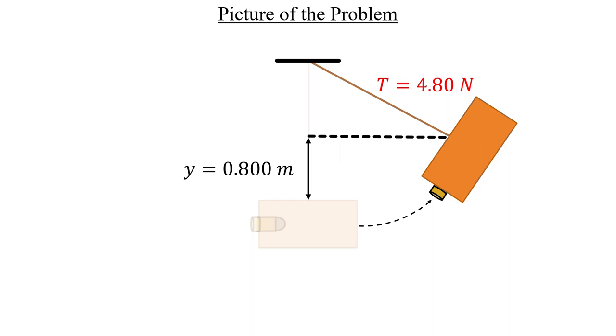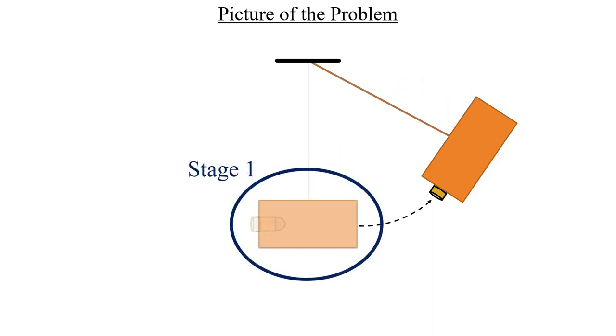This problem is also a really good example that demonstrates the limitations of our conservation laws. We'll begin the process by breaking this up into two stages. We'll call the initial collision stage one, and then once the swinging motion happens that will be stage two. We do this because each stage has different conserved quantities. Let's figure them out starting with stage one.